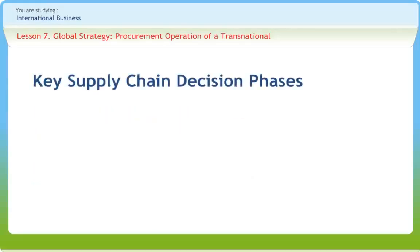Supply chain decisions have three phases, depending on the frequency of each decision and the time frame during which a decision phase has an impact. The first one is the supply chain strategy or design phase, during which, given the marketing and pricing plans for a product, a company decides how to structure the supply chain over the next several years.